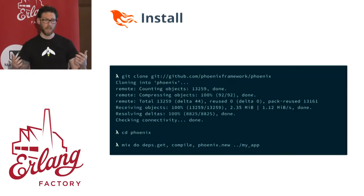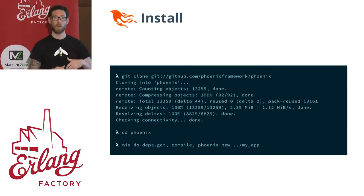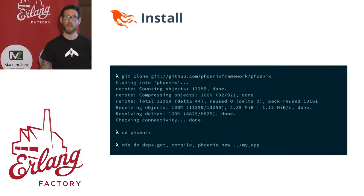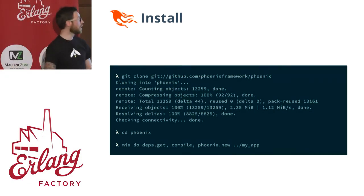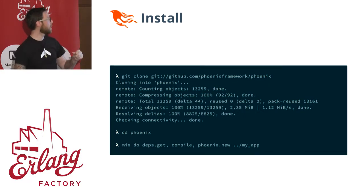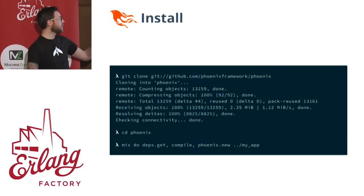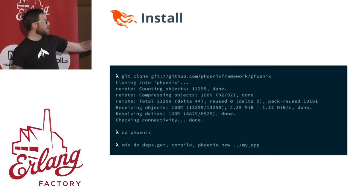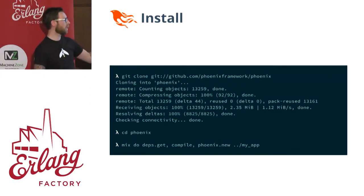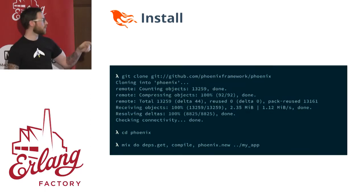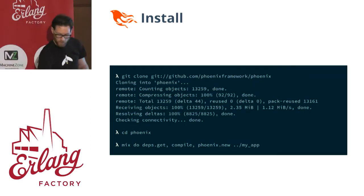I'm going to go through and show you how to install everything, and then break down all of the bits and components that make up Phoenix and how it works. You install it by cloning the Git repository, CD into the directory, get the dependencies, compile it, and then run a command called phoenix.new and give it a directory, which will generate your application.